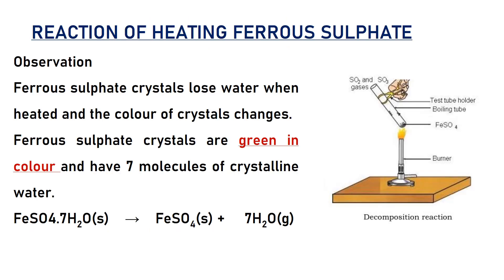Activity: heating ferrous sulphate. When we heat ferrous sulphate, the observation is that ferrous sulphate crystals lose water when heated and the color of the crystals changes. Ferrous sulphate crystals are green in color and have seven molecules of crystalline water. When heated, the water molecules evaporate. Chemical formula: FeSO₄·7H₂O → FeSO₄ + 7H₂O.